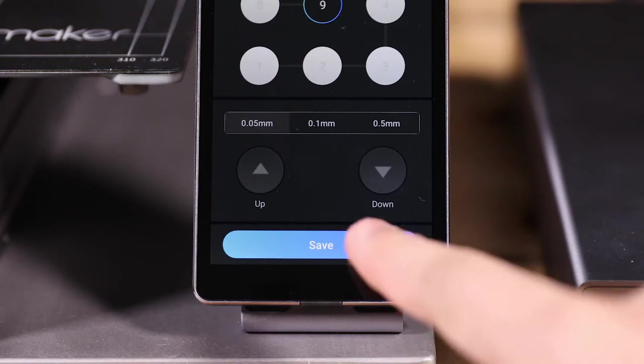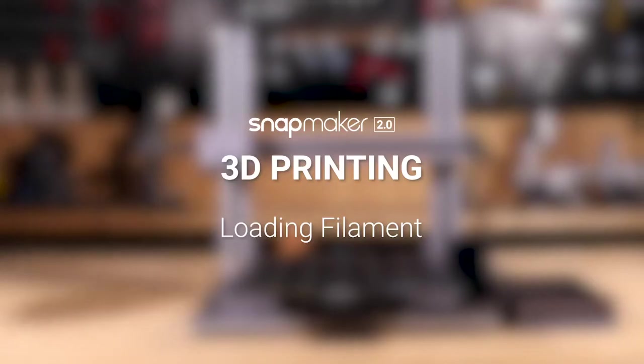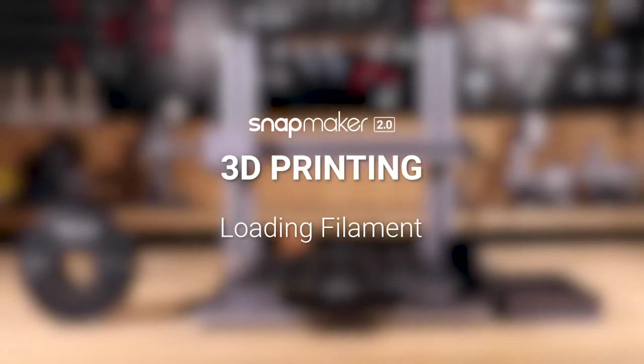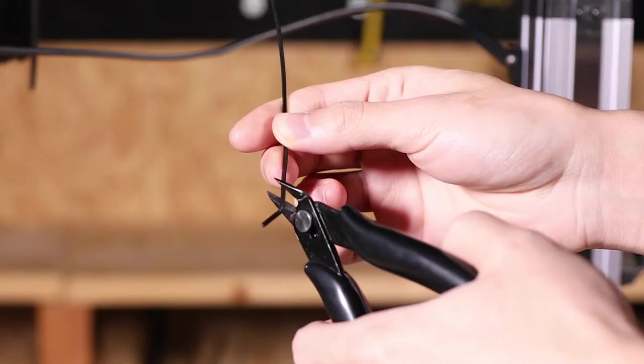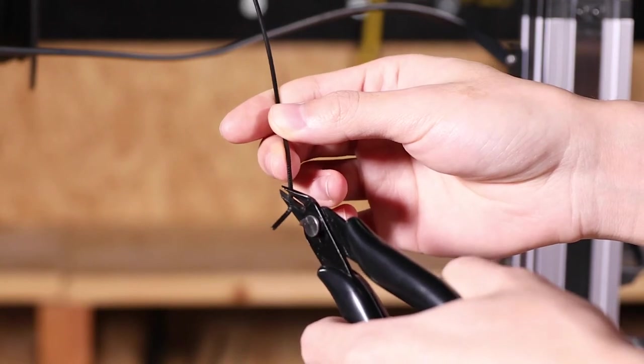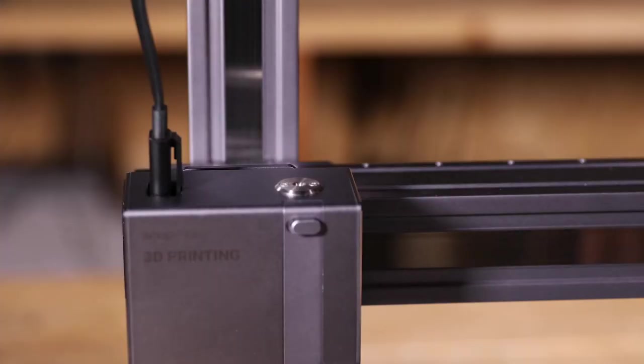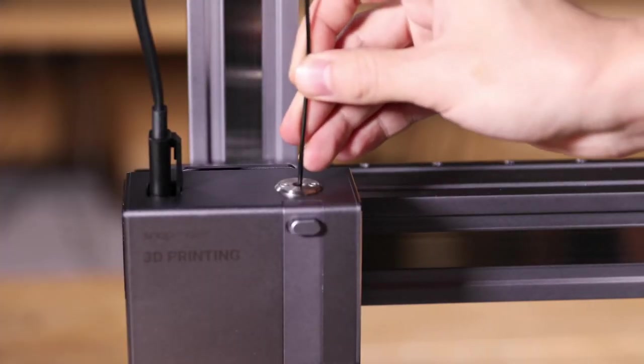When you finish calibrating, save the changes. In this video, we take the provided PLA filament as an example. Hang the filament over the filament holder. Cut the curved end of the filament with the diagonal pliers. And insert the filament into the 3D printing module.